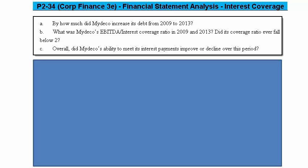Let's explore this interest coverage question. Part A asks how much did MyDeco increase its debt from 2009 to 2013. Part B asks what was the company's EBITDA divided by interest coverage ratio in 2009 and 2013, and did the coverage ever fall below 2.0. The last question asks whether MyDeco's ability to meet its interest payments improved or declined over this period.